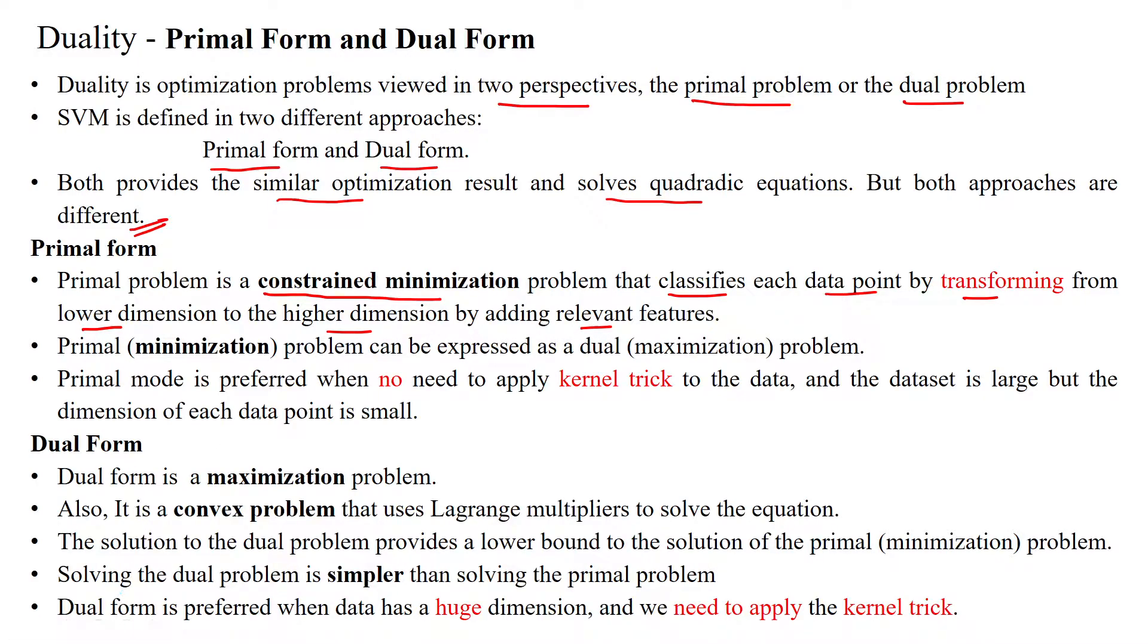When transforming the data from lower dimension, suppose we have x1 and x2, which transforms into x1, x2, x3, x4 - four features. So your dimension is increasing significantly.